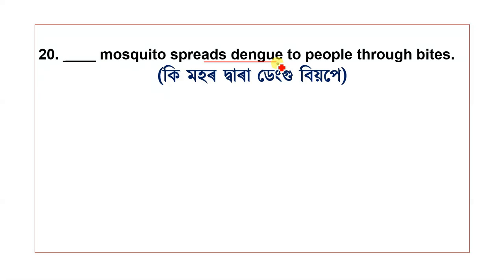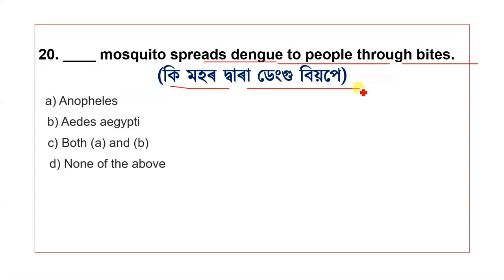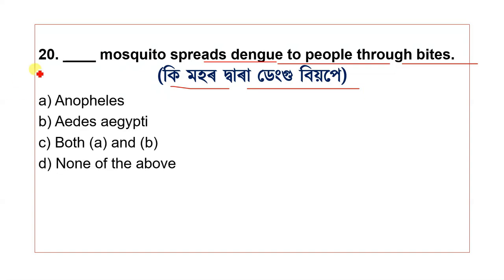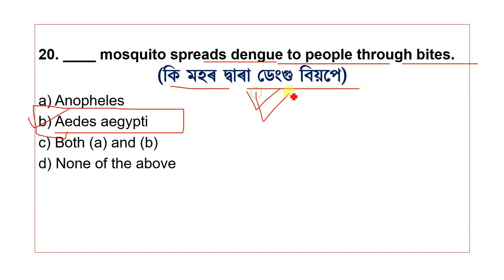Question 20: Which mosquito spreads dengue to people through bites? The options include Anopheles and others. The correct answer relates to the mosquito species responsible for dengue transmission.